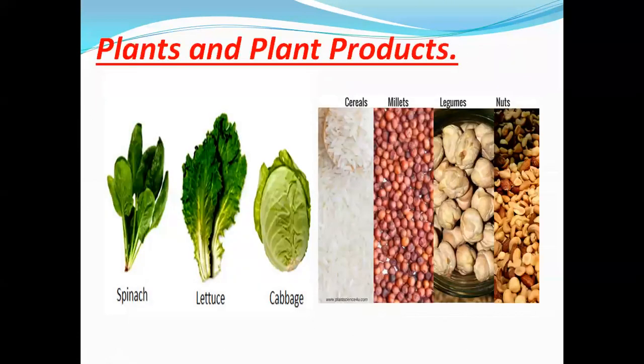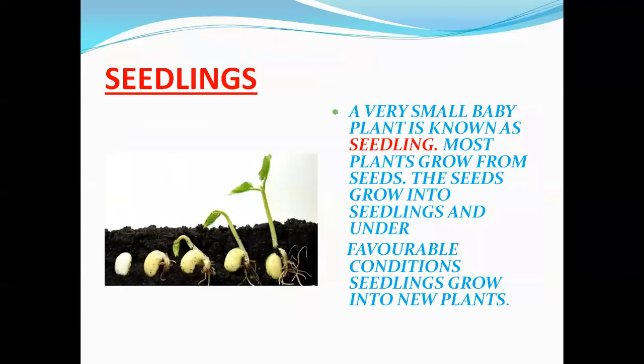To improve our immune system, we eat plants and plant products in many ways. A large number of plants are eaten or destroyed by us every day, still there are plenty of plants everywhere. Because plants continue to grow like all other living organisms. Most plants grow from their seeds. The seeds under favorable conditions grow into small baby plants. This is known as seedlings, and the growing of a new plant from the seed is called seed germination.